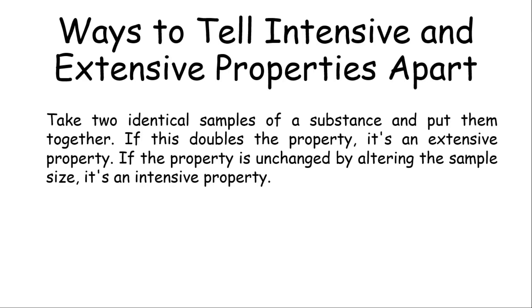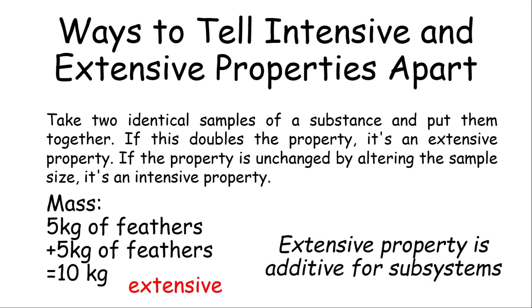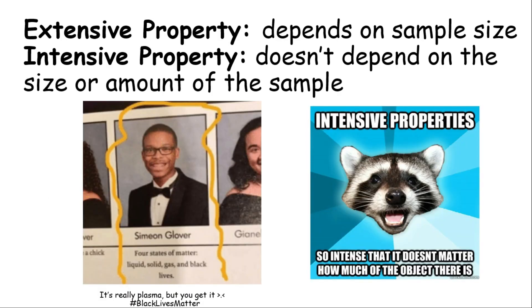So how do you tell intensive and extensive properties apart? What you need to do is to take two identical samples and put them together. If this adds up, then it's an extensive property. If the property is unchanged, it's an intensive property. For example, 5 kilograms of feathers. If you double it, you will have 10 kilograms of feathers. Therefore, it is an extensive property. Remember, extensive property is additive for substances.